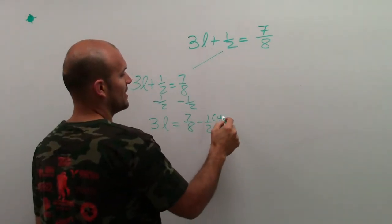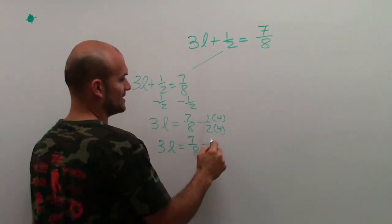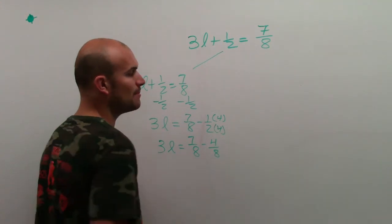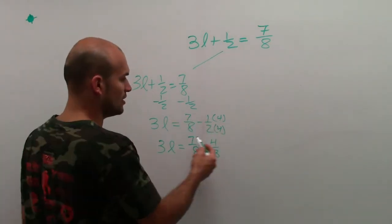So I have 3L equals 7 eighths minus 4 eighths. And the reason why I multiply by 4 over 4 is because I had to keep it as equivalent fractions.